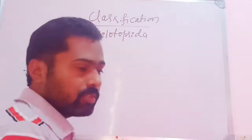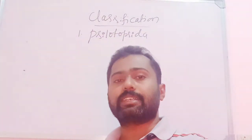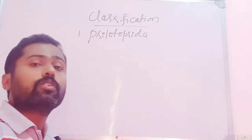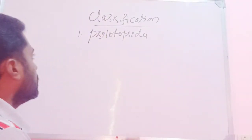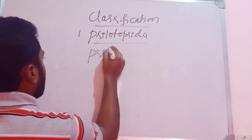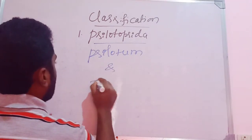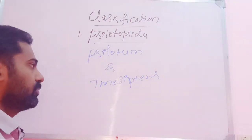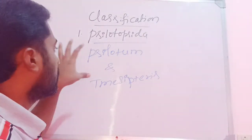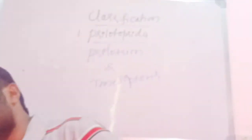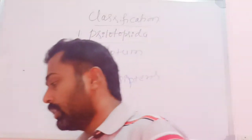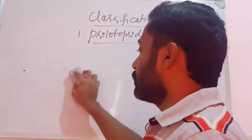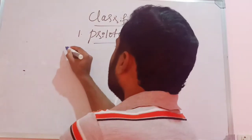There is another group called Psilophytopsida, which is a fossil form — all those plants are extinct. The living division Psilotopsida includes only two living forms: Psilotum and Metatepteris. These are the only two living members of this group.